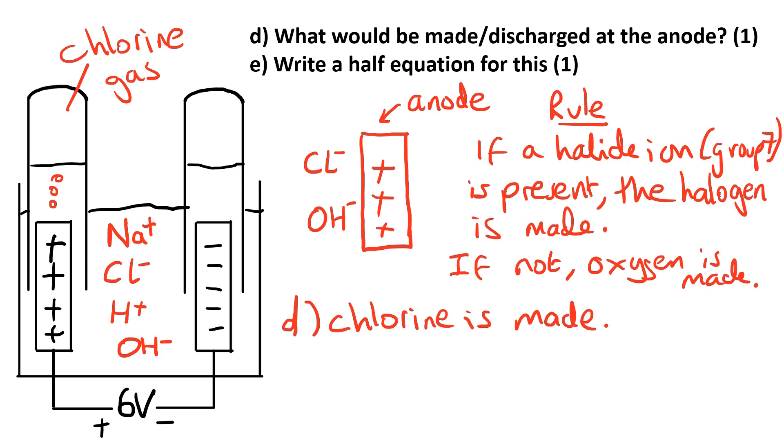For the half equation we need to remember that ions change into atoms, so the Cl- ions will change into chlorine atoms. We've got one electron to put somewhere—it goes on the right so the charge balances. But we've also got to remember that because it's a halogen, chlorine goes around in pairs, they form diatomic molecules. So if we're going to produce Cl2, we need to double up everything else in the equation.